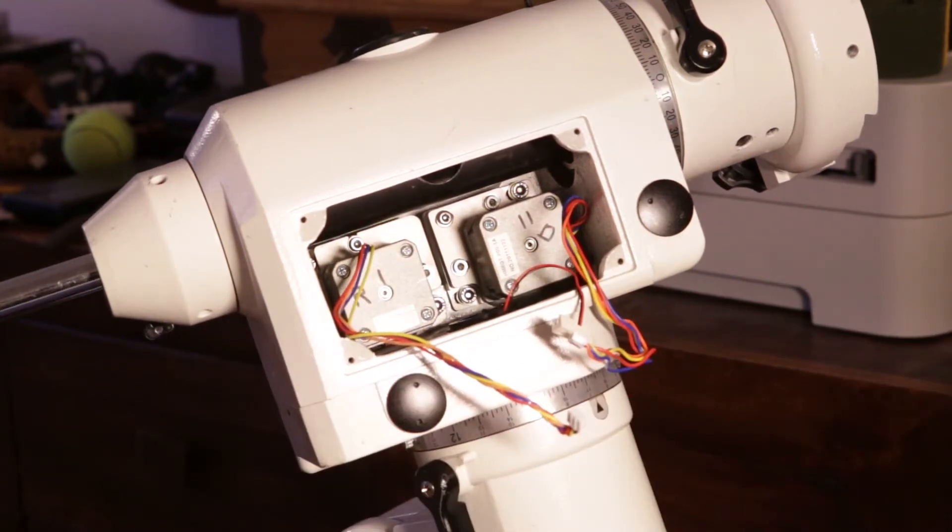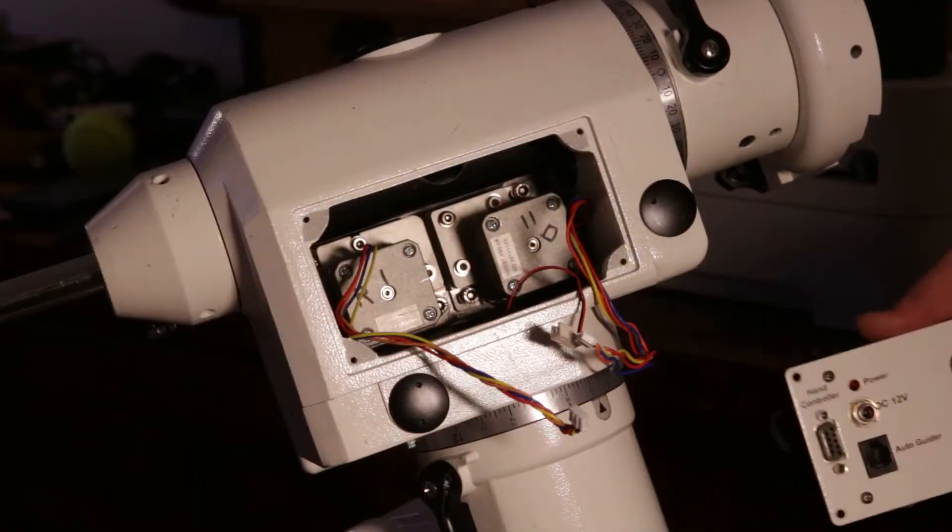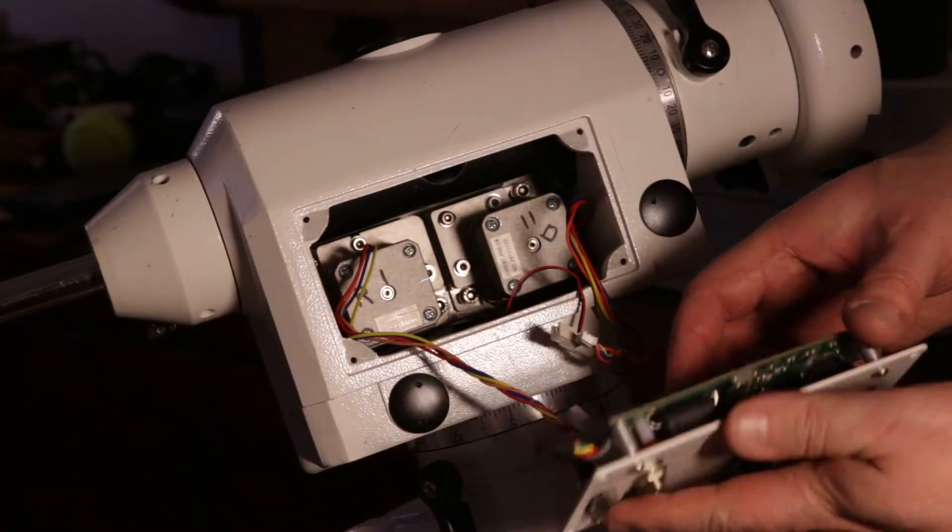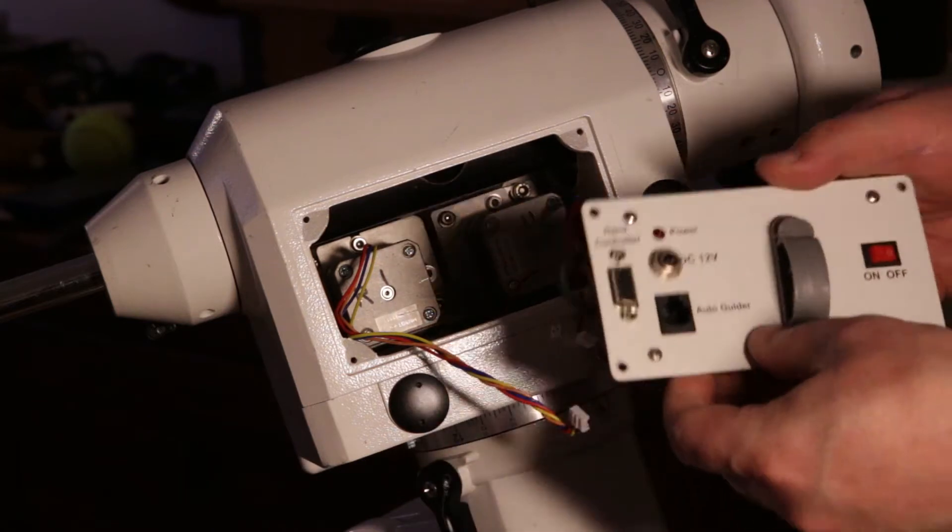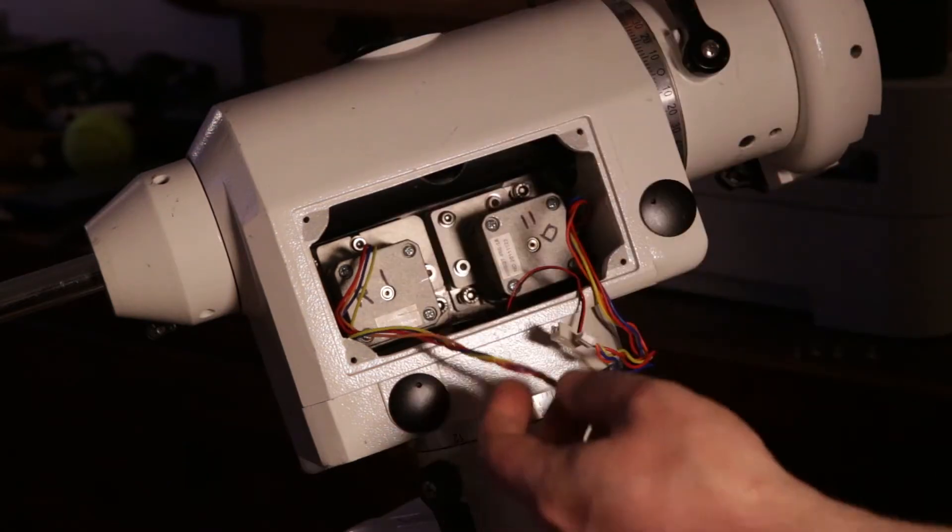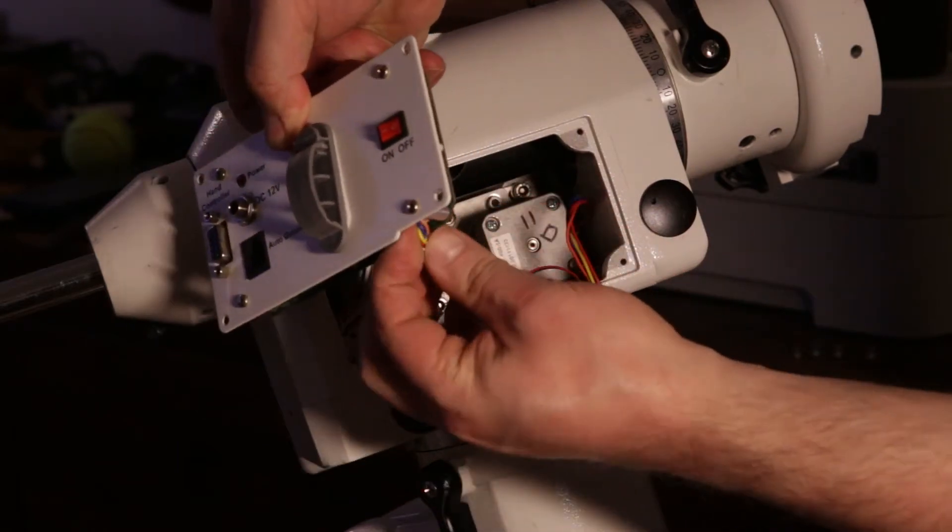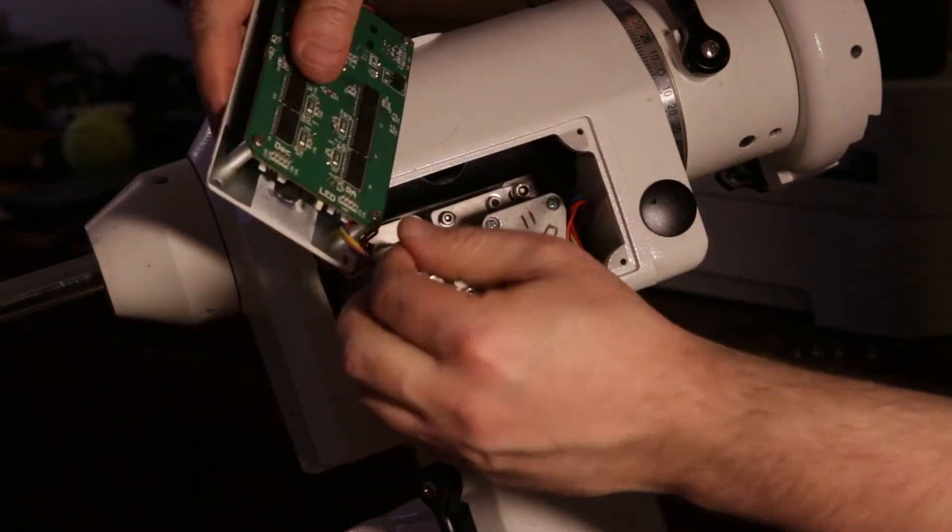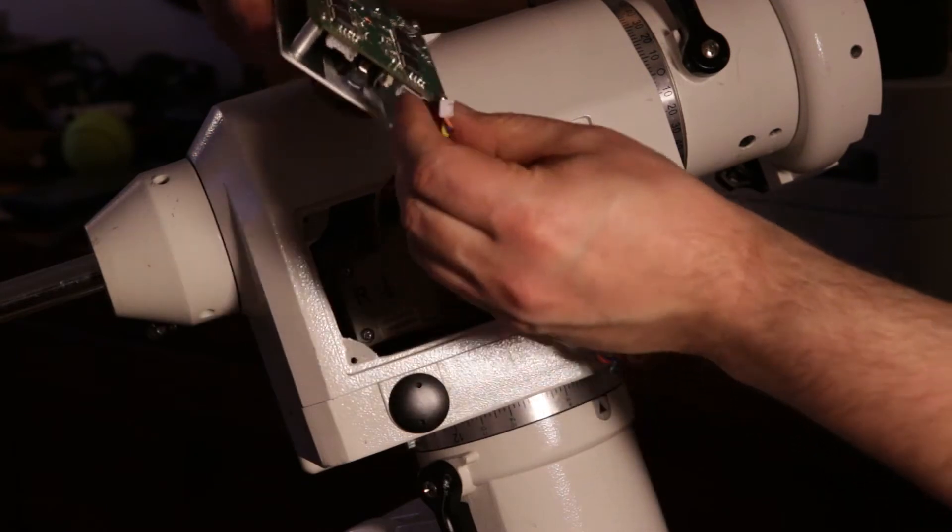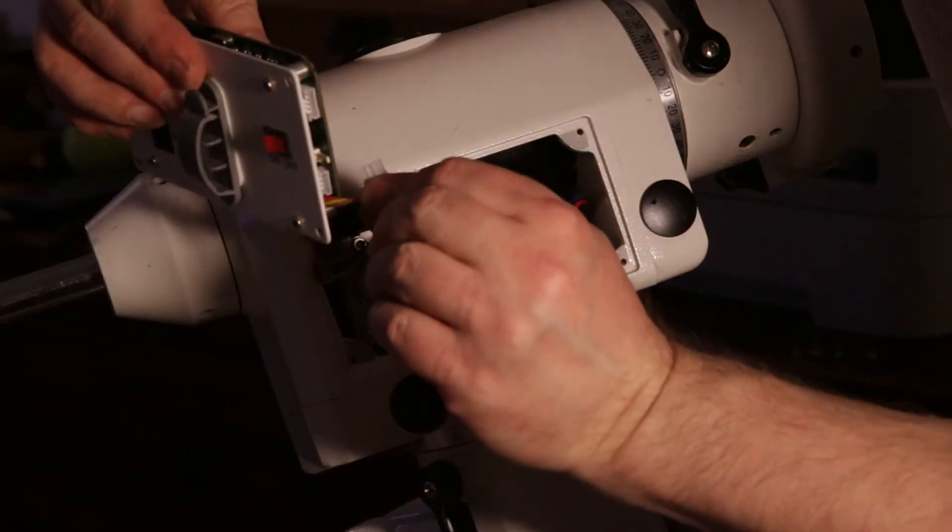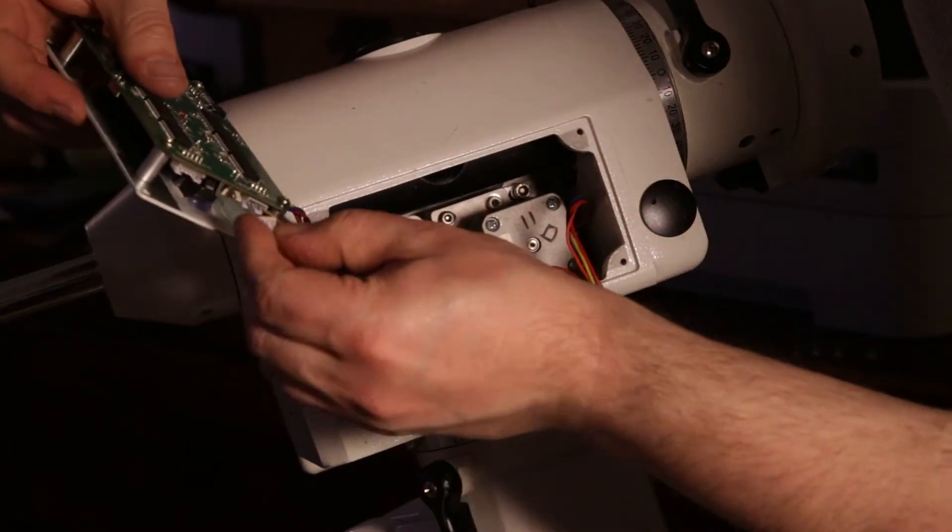And that's the motors back in place. OK. So, let's put the panel back in. And we start by feeding this RA-axis motor cable. So, this is the RA-axis connector. And make sure that you put it the right way around. There's a little slot in there.